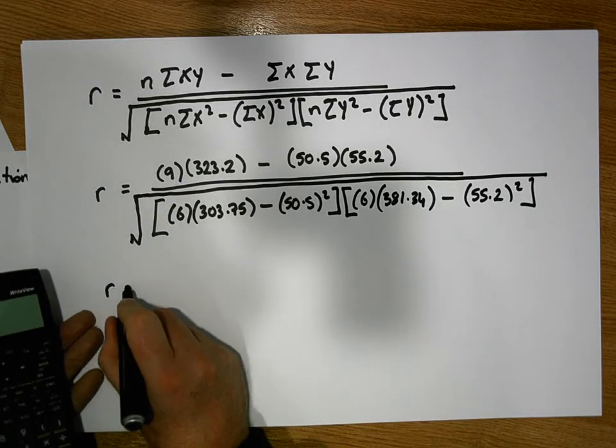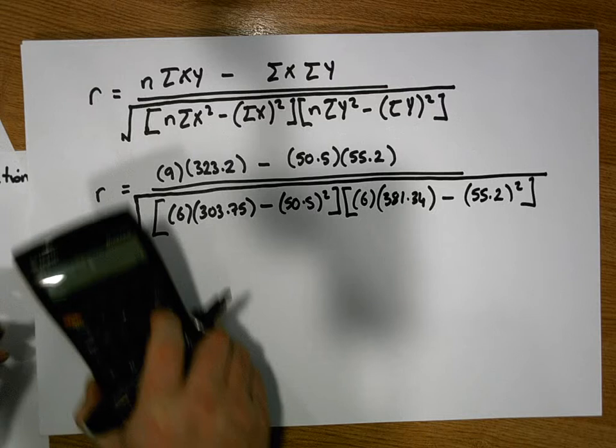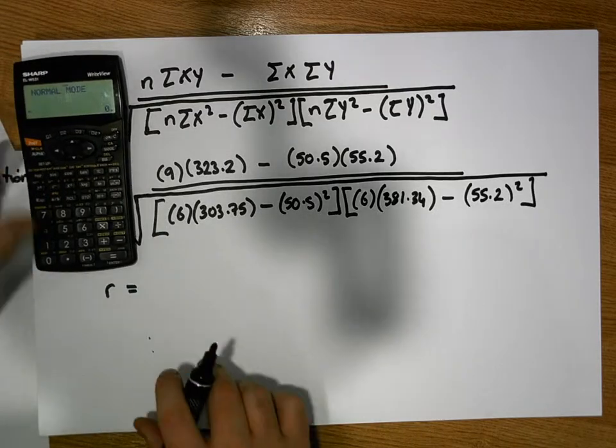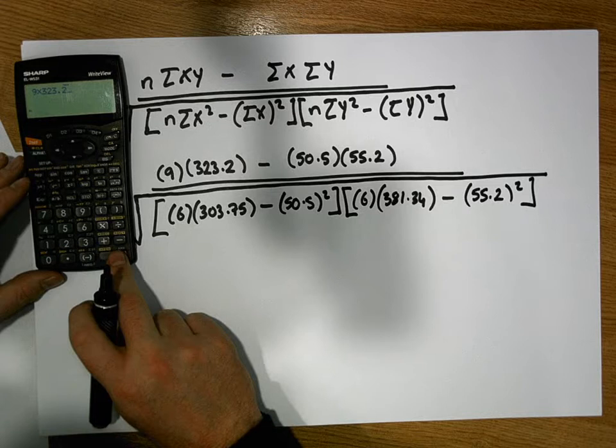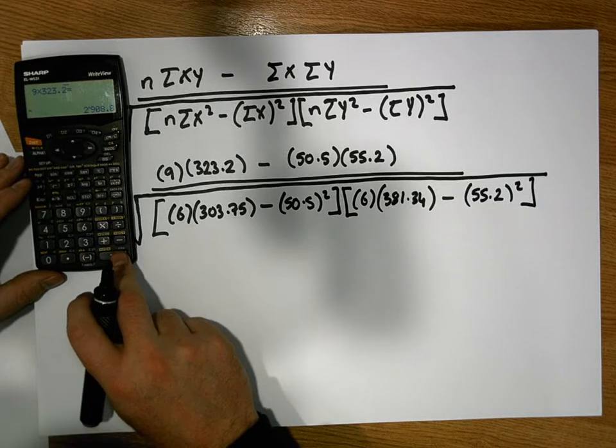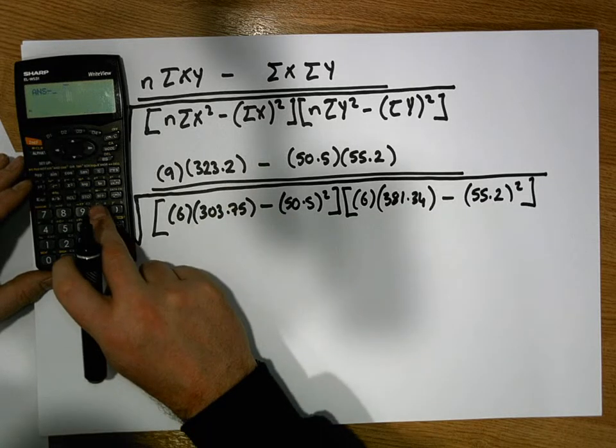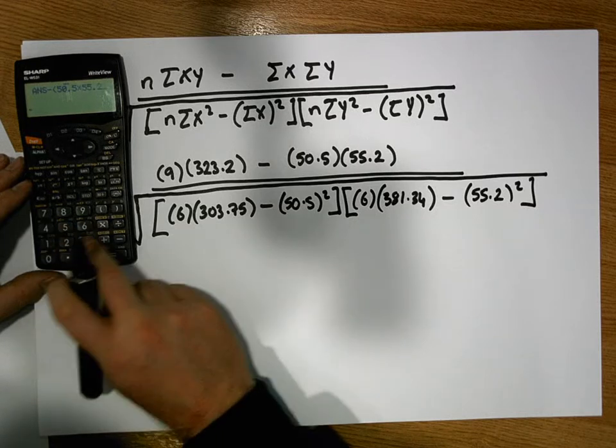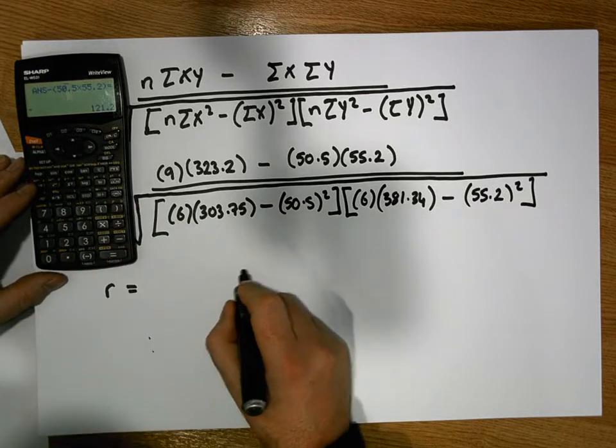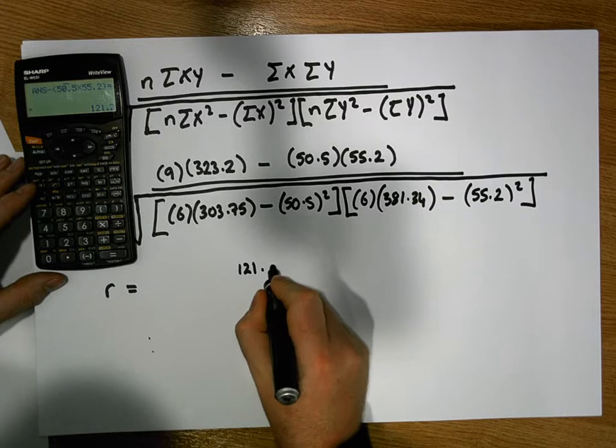So we have r equals, on the calculator here, it's 9 times 323.2, that gives us 2,908, minus 50.5 times 55.2. And that gives us a value of 121.2.